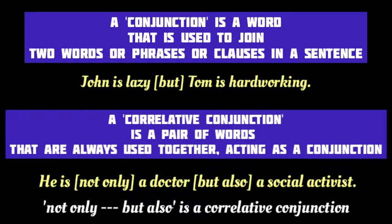First off, what is a conjunction? A conjunction is a word that is used to join two words, phrases, or clauses in a sentence. So, a conjunction connects two words, phrases, or clauses in a sentence.